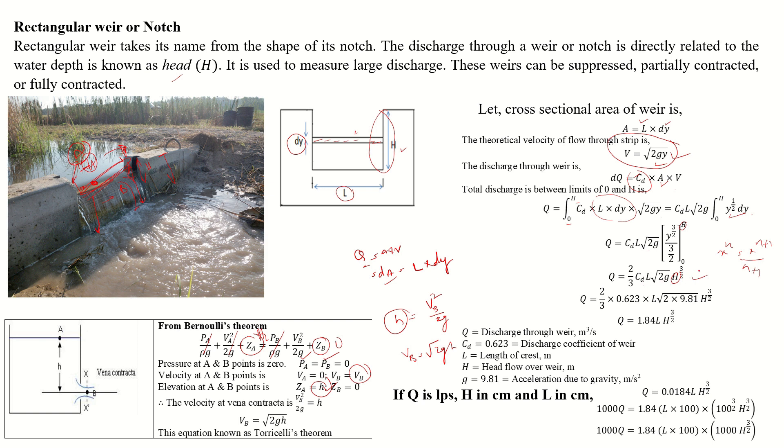This is the rectangular weir formula. This is important.